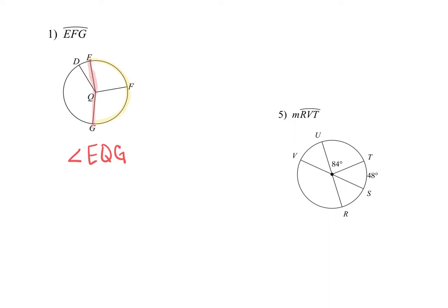The next group tells you to find the measure of the arc or angle that is missing or that they're asking for. In this case, they want the arc R, V, T. There are a couple ways you can do this: find what you don't have and subtract from 360, or add all of the ones that you have. Personally for this one, they want the entire circle except for this piece right here, so basically 360 minus that piece.